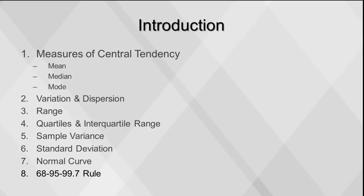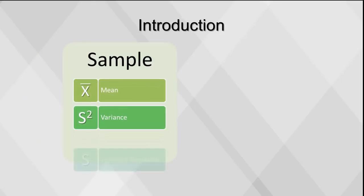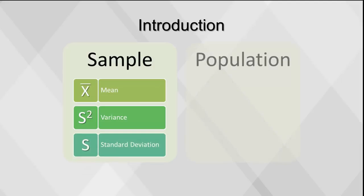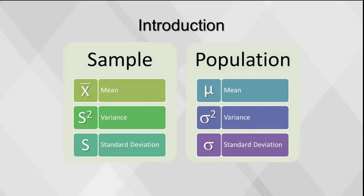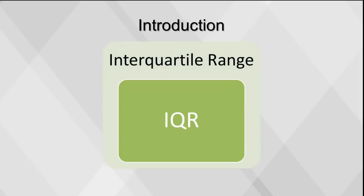This video provides a quick review of the measures of central tendency including mean, median, and mode, variation and dispersion, range, quartiles and interquartile range, sample variance, standard deviation, and the normal curve, as well as the 68-95-99.7 rule. Here's a quick review of symbols we'll use in this video, including the abbreviation IQR for interquartile range.